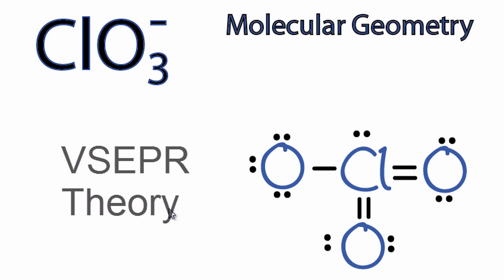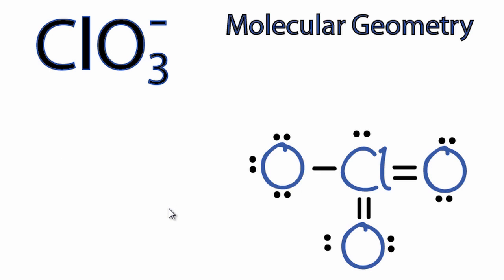In accordance with valence shell electron pair repulsion theory, they're going to spread out. They're going to push away from each other, so they're as far away as possible while still bonded to that central chlorine. When they do that, that's what's going to give us our shape.